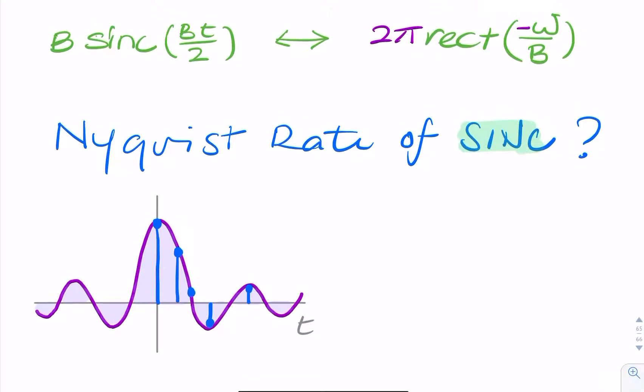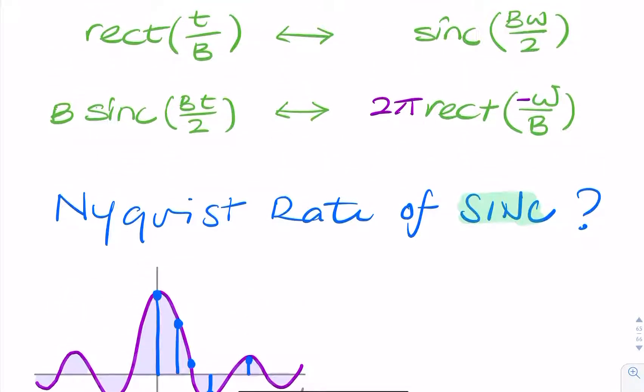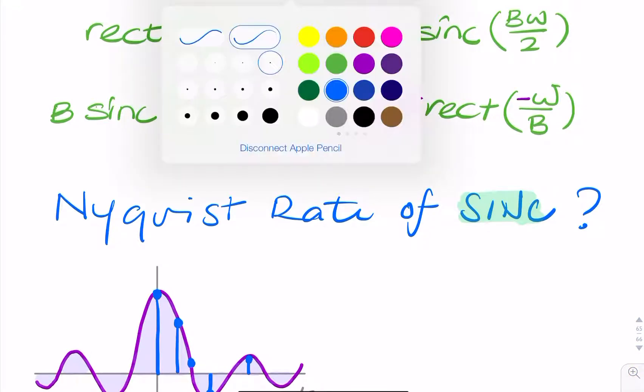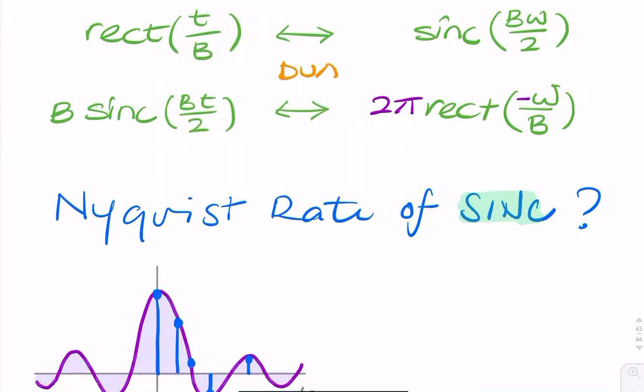If you're not familiar with that, you will definitely have seen this: a rectangular function in the time domain will give you a SYNC function in the frequency domain. Then using the duality property, or the symmetry property, we can rewrite that as a SYNC function in the time domain. Rectangular function will give you a RECT function or a low-pass filter in the frequency domain.